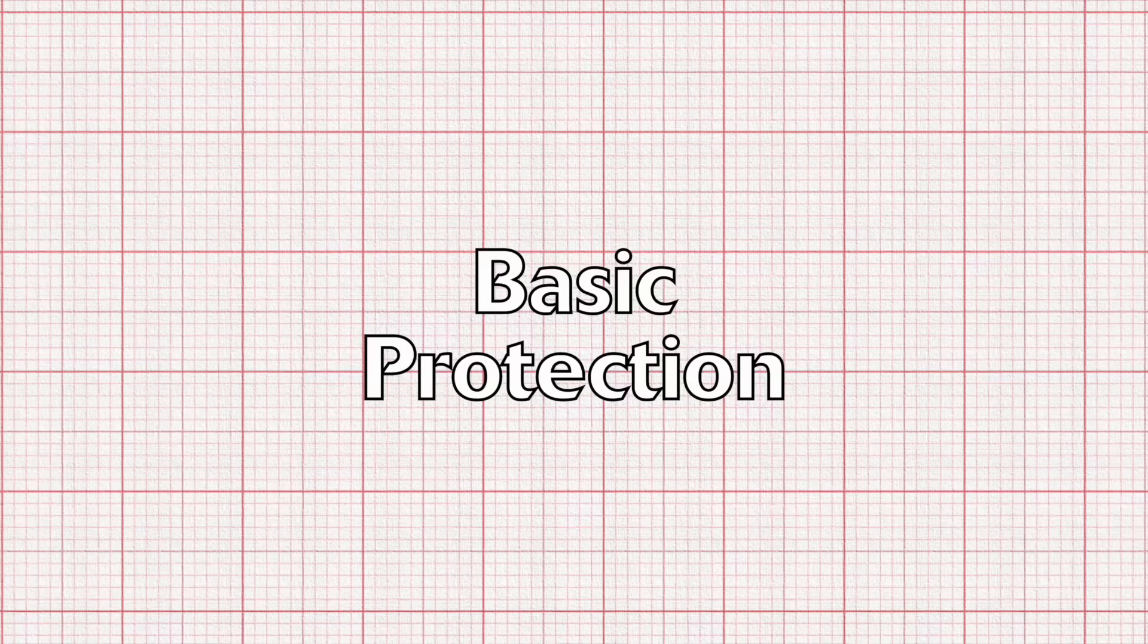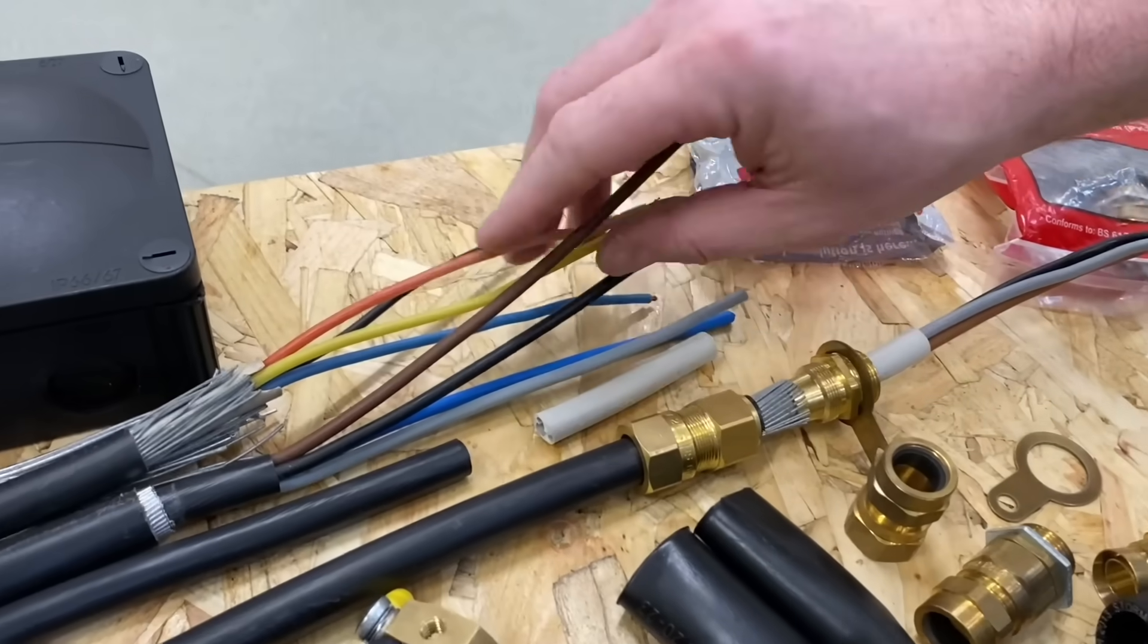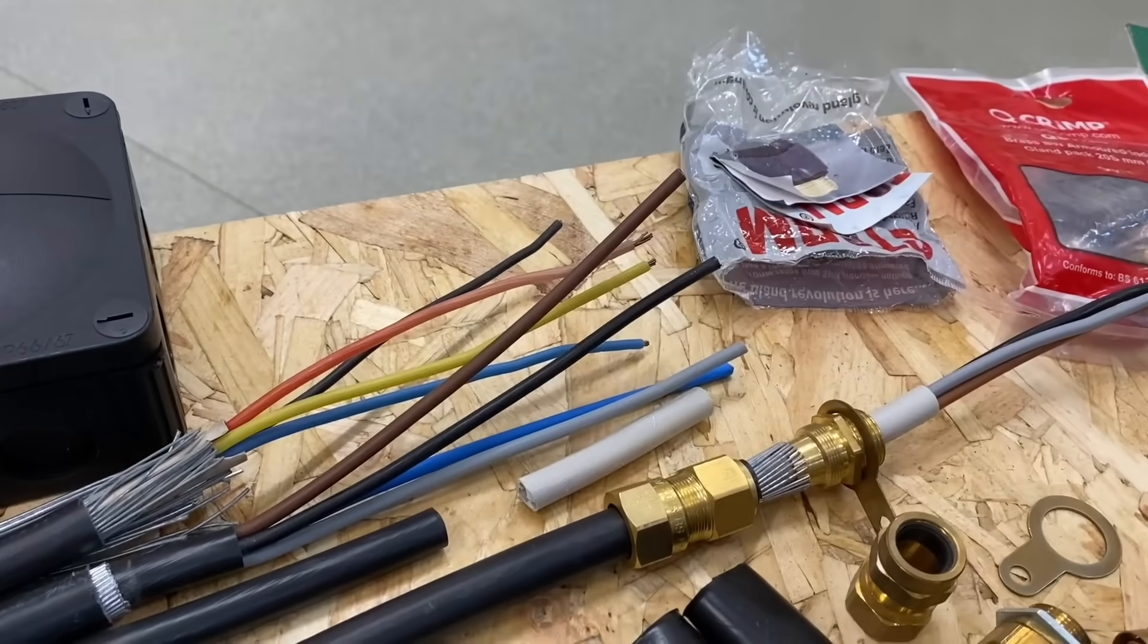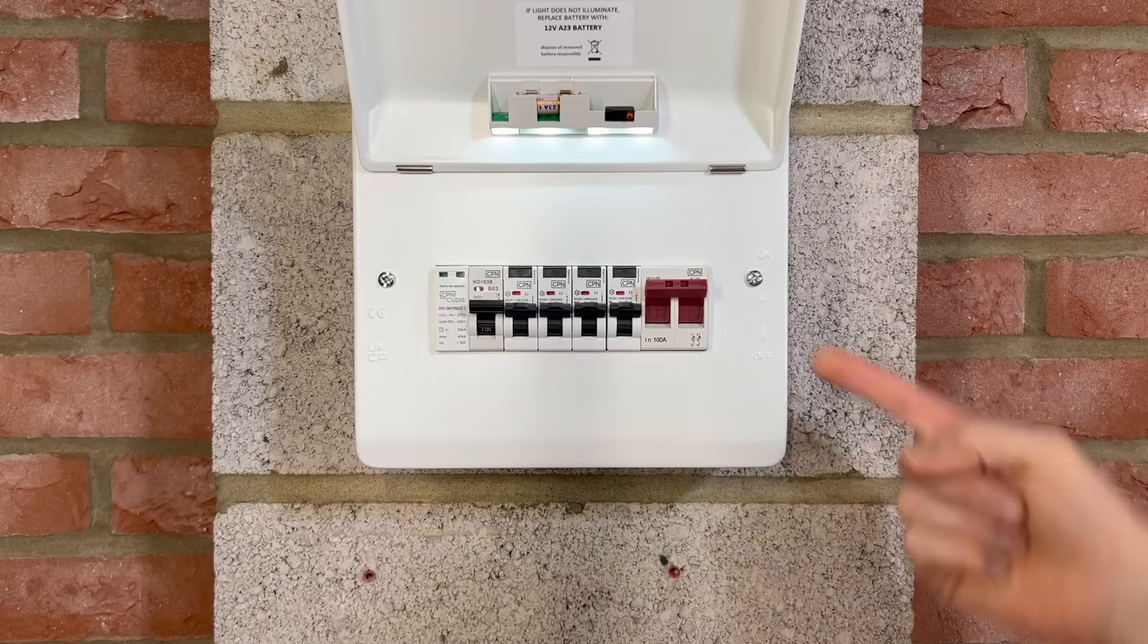First up is basic protection. This is what we put in place to stop us from touching live parts that are meant to be live under normal operating conditions. So things like wrapping conductors in insulation, putting live parts in enclosures and so on.